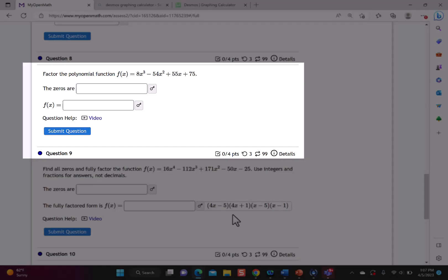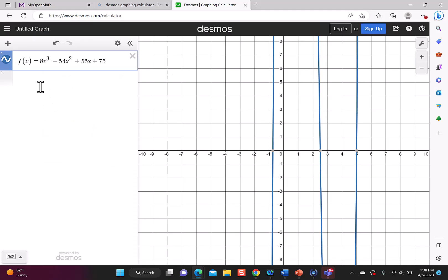So I'm going to use this as my example. f is 8x³ minus 54x² plus 55x plus 75. So I went to Desmos, put in my function, and then I can see on the graph that I have three zeros. One at negative 0.75, one at 2.5, and one at positive 5.